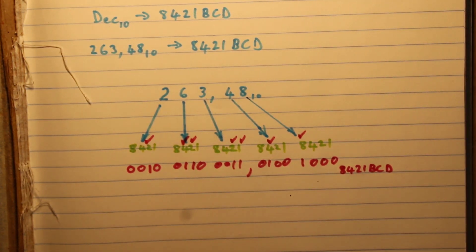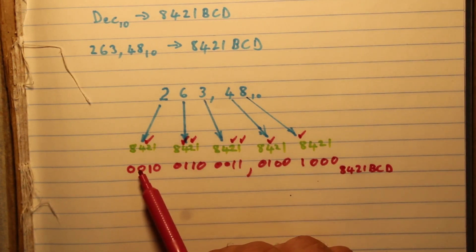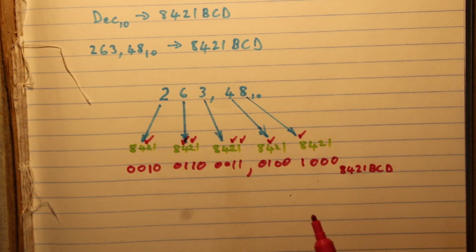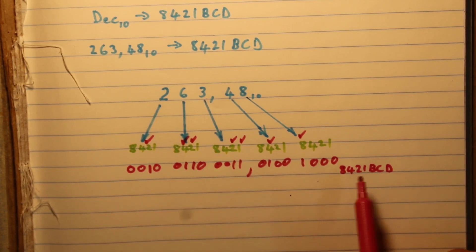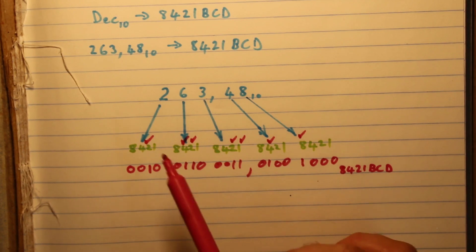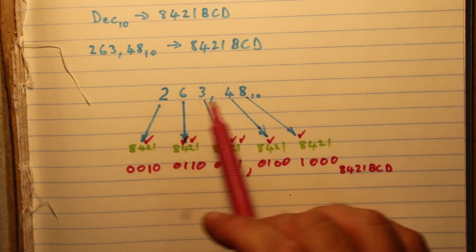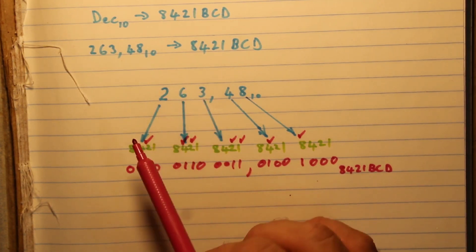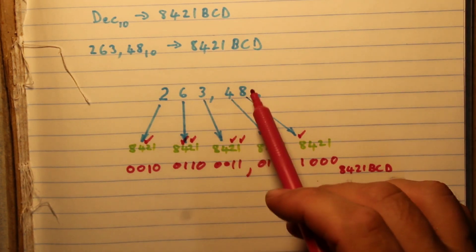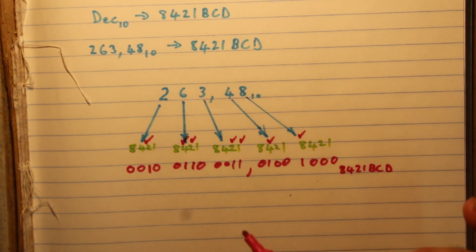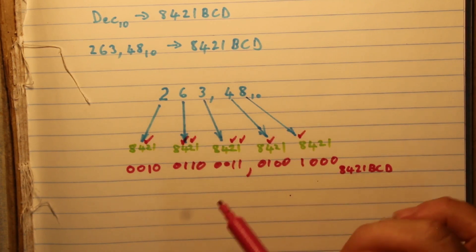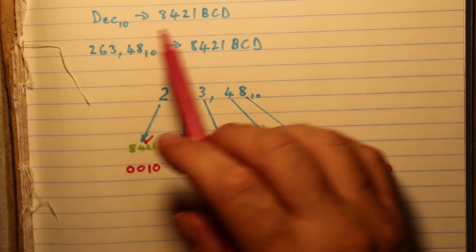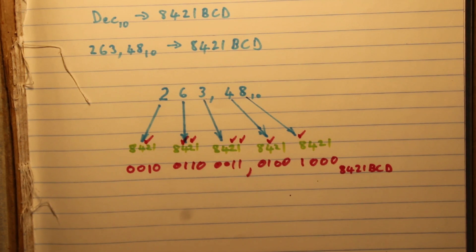Normally in binary we'd clean up the number by removing leading and trailing zeros, but because it's a code it's important to leave those zeros in — you cannot remove them or it will change what the code represents. Also, this is not binary, so never use the decimal-to-binary conversion method of repeatedly dividing by two or multiplying the fractional part by two — that would give a totally different answer. Always use this BCD method when converting from decimal to 8421 BCD.